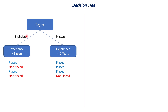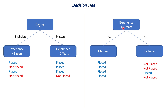For the first decision tree with degree as root: among people who completed bachelors with greater than two years of experience, two people are placed and two are not placed. Among people who completed masters with less than two years of experience, three people are placed and one is not placed. In the second decision tree with experience as root: among those with greater than two years of experience, four people are placed. Among those with less than two years of experience, one person is placed and three are not placed.